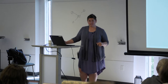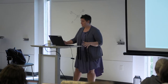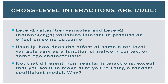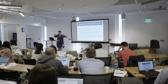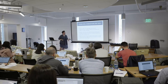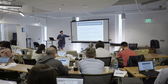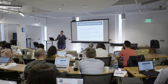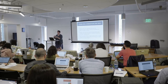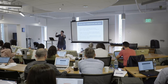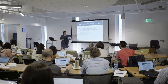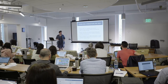I want to talk a little bit about cross-level interactions because this is where things get super cool and really fun. We can look at level-one variables and level-two variables and whether those interact — so alter or tie-level stuff and network or ego-level stuff. Usually it's: how does the effect of some alter-level variable vary as a function of what's happening at the ego level or network level? Or in other words, how does what's happening within this dyad differ as a function of ego-network characteristics or the network in which that tie is embedded?